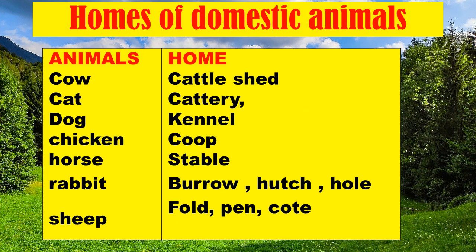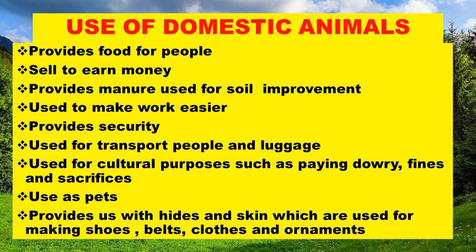Cow lives in a cow shed. Cat lives in a cat tree. Dog lives in a kennel. Chicken lives in a coop. Horse lives in a stable. Rabbit lives in a barrel. Sheep lives in a fold, pen, or cot.